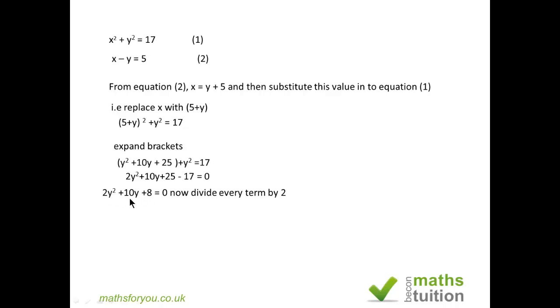Now 10 and 8 are multiples of 2, so if you divide every term by 2, you get y squared plus 5y plus 4. If you divide 0 by 2 you still get 0, so that makes no difference at all.